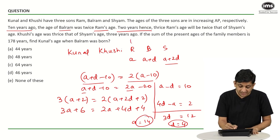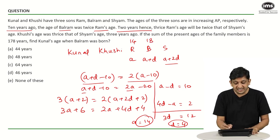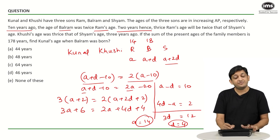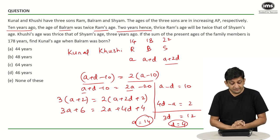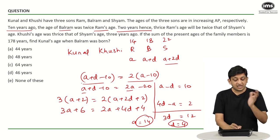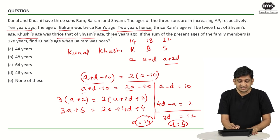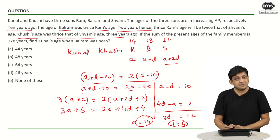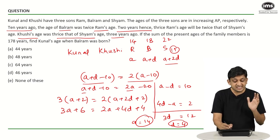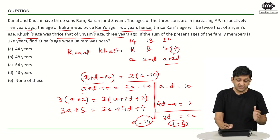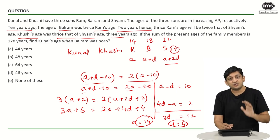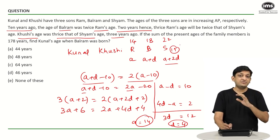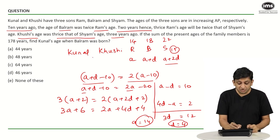Now we need to find Kunal's and Khushi's ages. Khushi's age was thrice Shyam's age 3 years ago. Three years ago Shyam was 22 minus 3 equals 19 years old. So Khushi was 19 into 3 equals 57 years old three years ago. Therefore Khushi is 57 plus 3 equals 60 years old today.